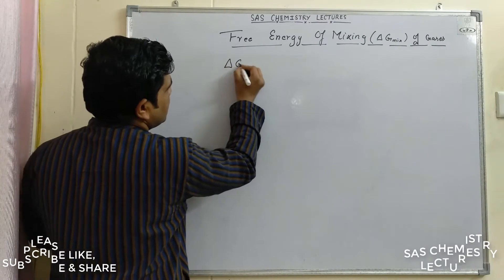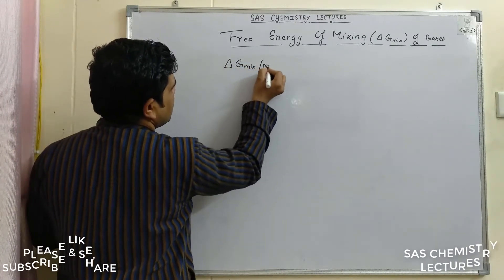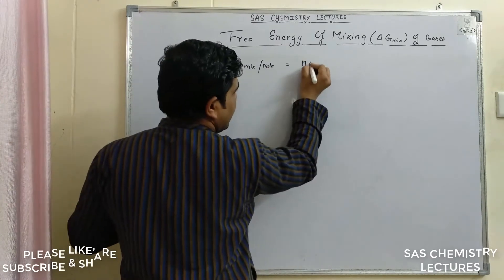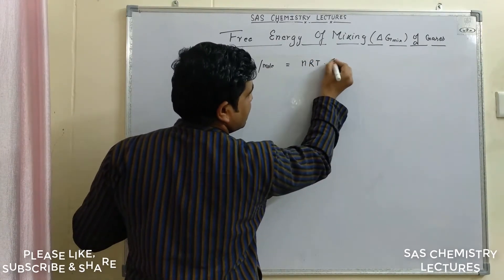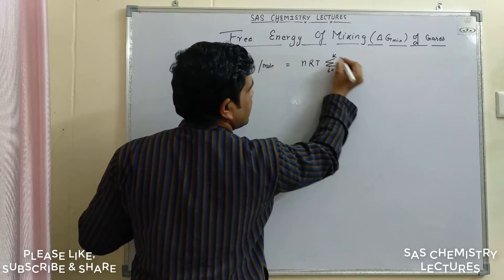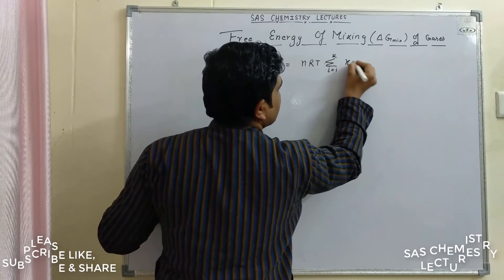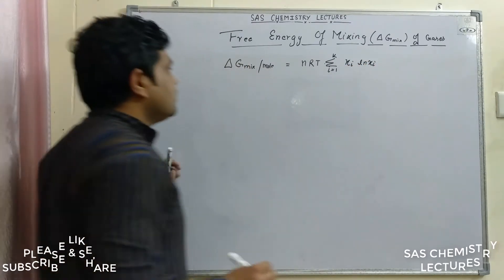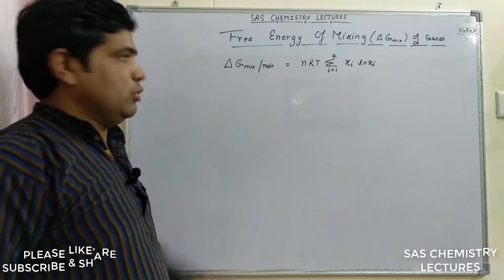So the formula is: ΔG_mix per mole = nRT Σ (i=1 to k) x_i ln x_i. This is the formula for the free energy of mixing of a gas per mole.